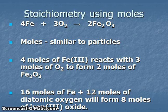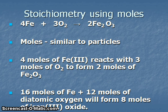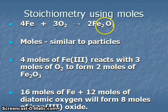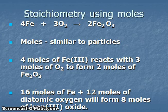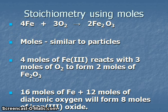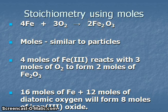Just as we can understand chemical reactions at the particle level, we also want to understand them at a level which is going to be observable in the classroom. That's where we're going to be using the mole concept. 4 atoms of iron is not something we could observe in the classroom, neither is 3 molecules of oxygen or 2 formula units of iron oxide. However, 4 moles of iron would be a measurable amount, as would 3 moles of oxygen. We need to conserve the ratios: 4 moles of iron reacting with 3 moles of oxygen to produce 2 moles of iron oxide.